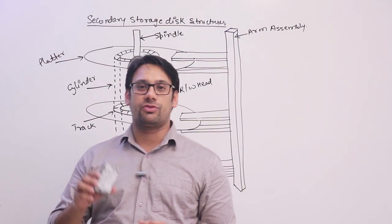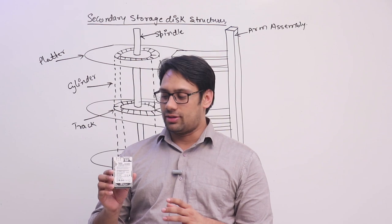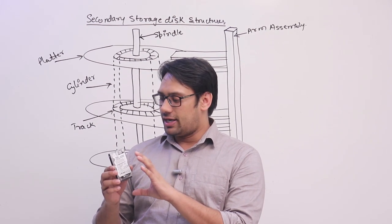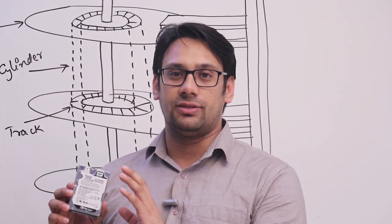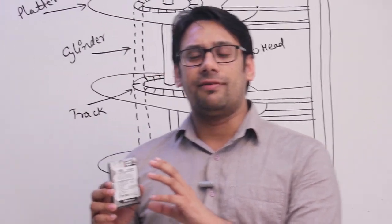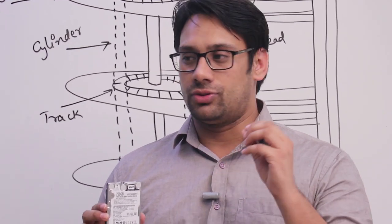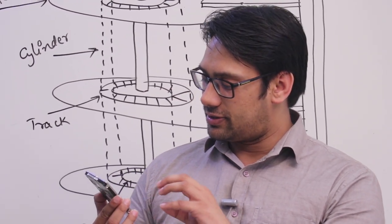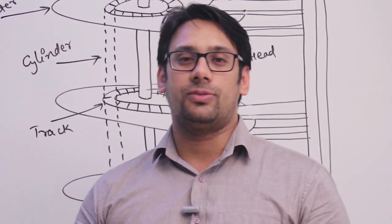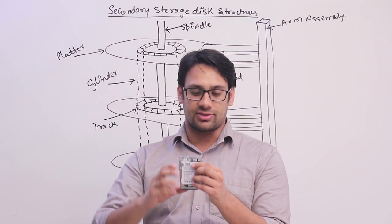As you can see, I have a secondary memory here which is a hard disk drive. I took it out from a laptop. Some of you are having bigger drives compared to this — this is a very small, compact drive, a 750 GB drive. On your desktops, generally we have 3.5 inch drives which are bigger in size.